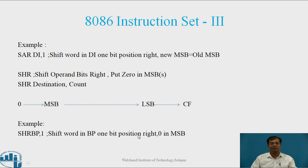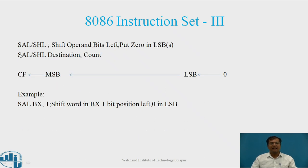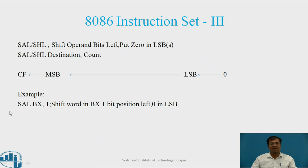Next is SAL or SHL — shift operand bits left, putting 0 in LSB. The syntax is: SAL/SHL destination, count. The bits shift left one position each time; the MSB content is copied to the carry flag (CF) and 0 is placed in the LSB. Example: SAL BX, 1 — shifts the word in BX one bit position left and the LSB is updated as 0.